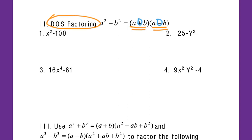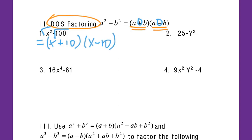Let's look at the first example. You have x squared minus 100. This has two terms and subtraction, so try to take the square root of both numbers. I get x and 10. So the answer is (x plus 10) times (x minus 10). That's it.